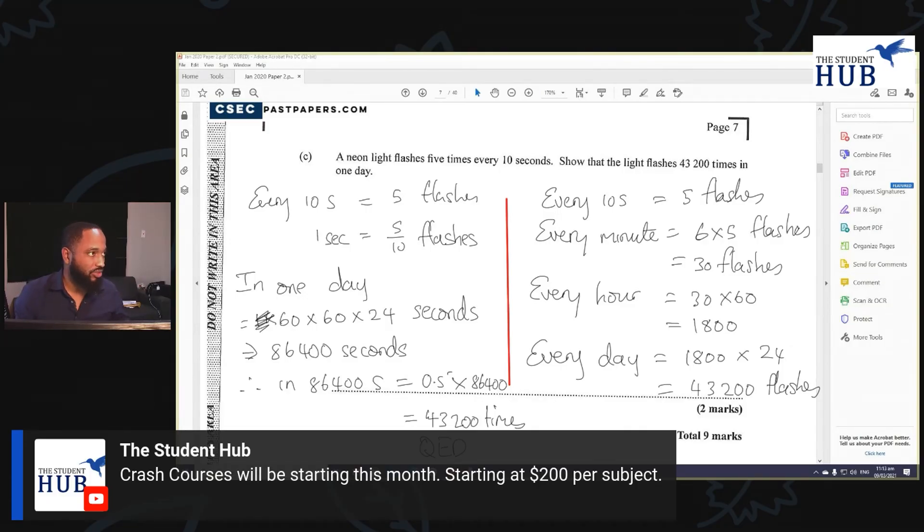Crash courses will be starting this month starting at $200 per subject, so you can investigate that. We're doing crash courses in every CSEC subject, so look out for that. Remember to bless and like on the video. I'll see you again tomorrow. I'll be looking at some more consumer arithmetic questions.